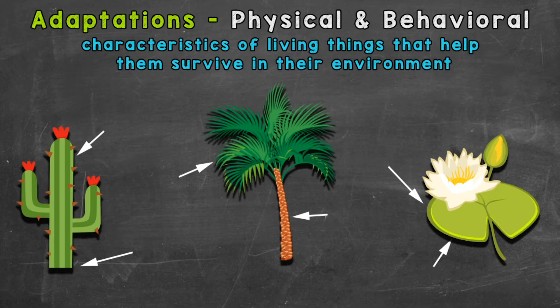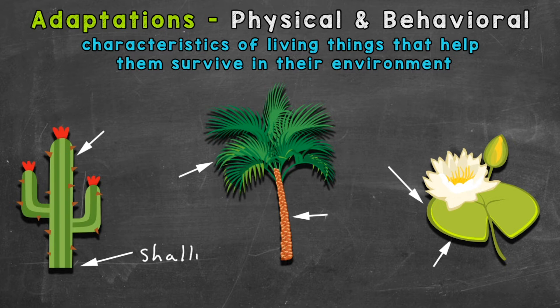We'll go through some examples for three different plants, and we'll start with a desert cactus. Desert cacti live in hot and dry environments. There are many different types of desert cacti, so they can differ, but here are some common adaptations. There's very little rain and precipitation in a desert, so cacti need to adjust. In order to collect water quickly before it evaporates, shallow root systems that are very widespread are in place, so these desert cacti can collect as much water as quickly as possible.